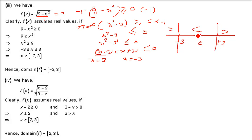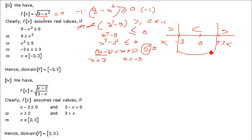From the 3 partitions, the outer regions are greater than 0 and the middle region between minus 3 and 3 is less than 0. Since we need less than or equal to 0, we consider only the middle region, and because of the equality, we include minus 3 and 3 as well. So we put square brackets. The domain of this function is [minus 3, 3].